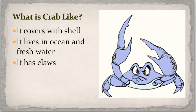Crab. It is covered with a shell — masih ingat shell? Cangkang. It lives in the ocean and fresh water — dia bisa hidup di laut ataupun air tawar. It has claws — memiliki capit.